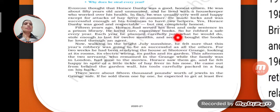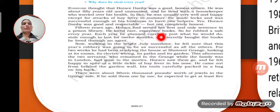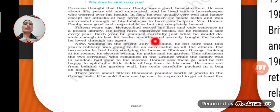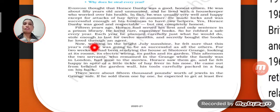He loved rare and expensive books, so he robbed a safe every year. Each year he planned carefully just what he would do, and stole enough to last for 12 months. He secretly bought the books he loved through an agent.